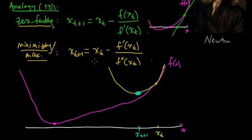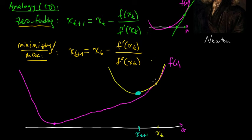One thing you may notice is that if it's the same procedure for minimizing and maximizing, how do we know we're not going to a maximum? That is indeed a weakness of this method. You can recognize what's going on by looking at the second derivative: if it tells you the function is convex, you're in good shape; if it's concave, you're going the wrong direction. One thing people do is shift from Newton's method to gradient descent if you're going the wrong way — just switch to gradient descent to go in the right direction.